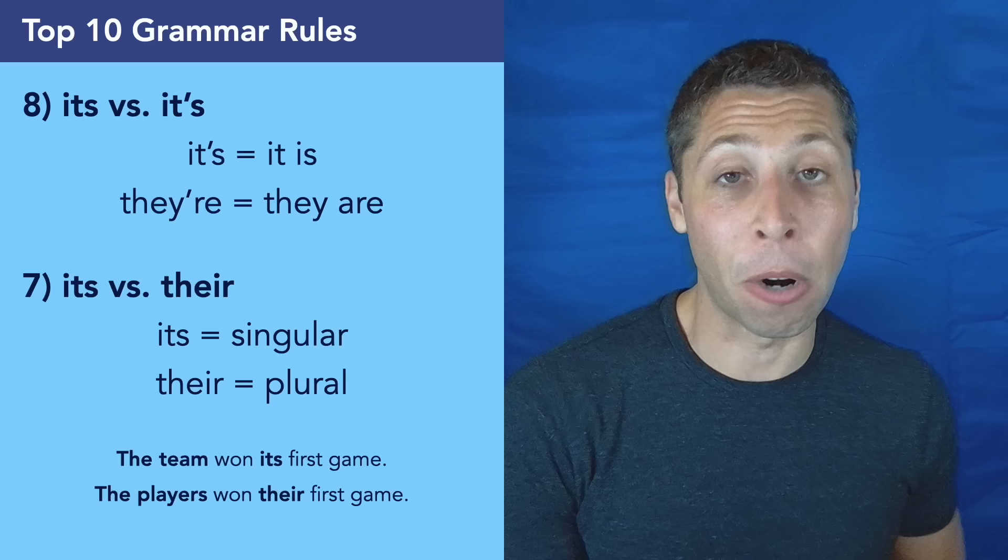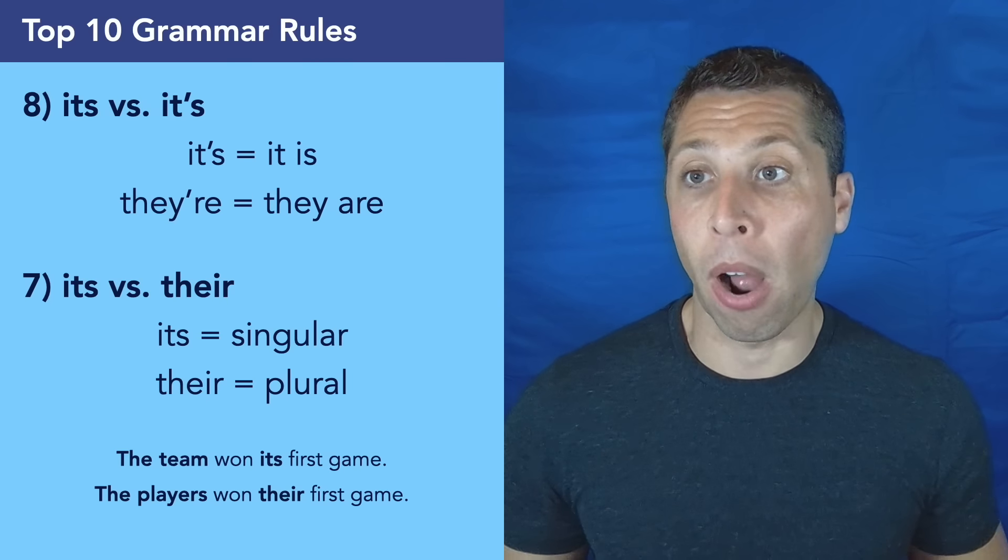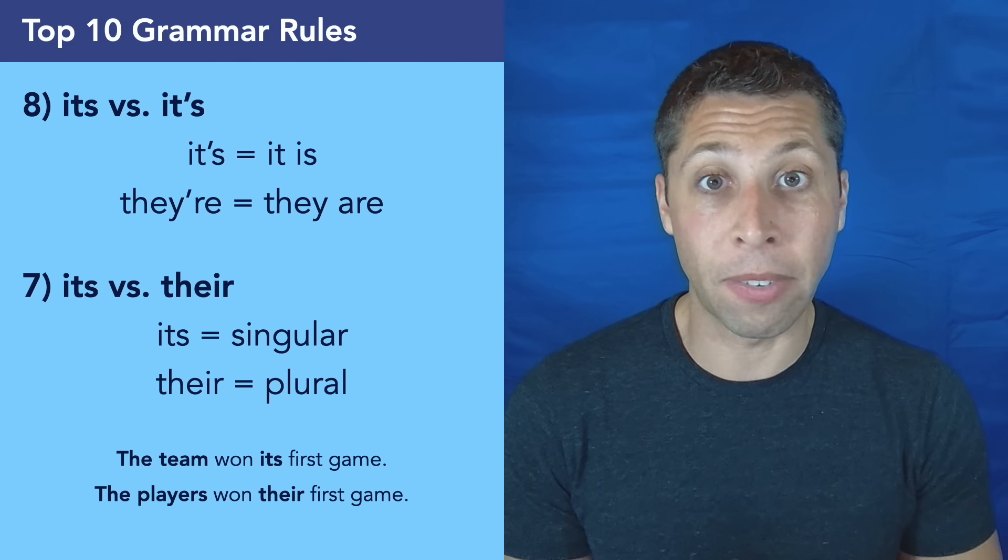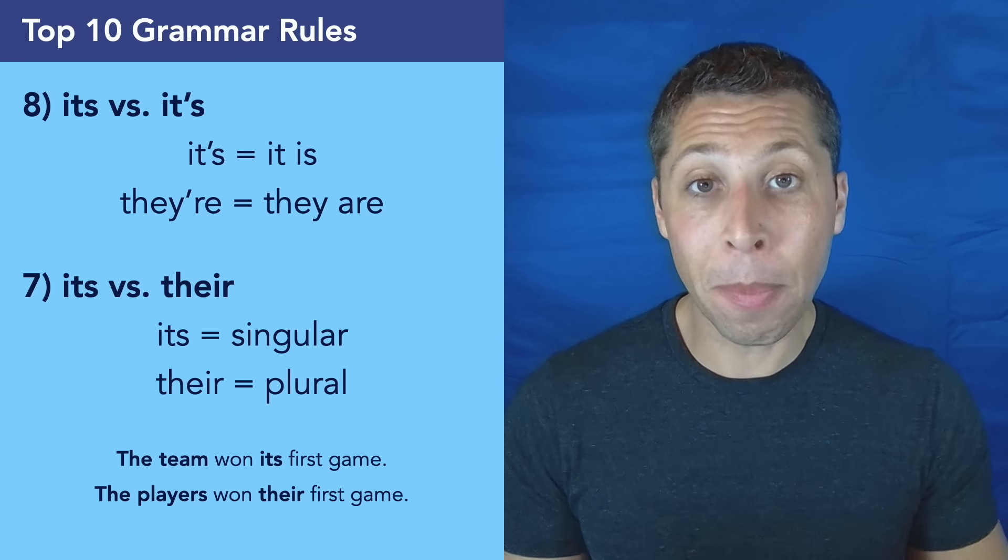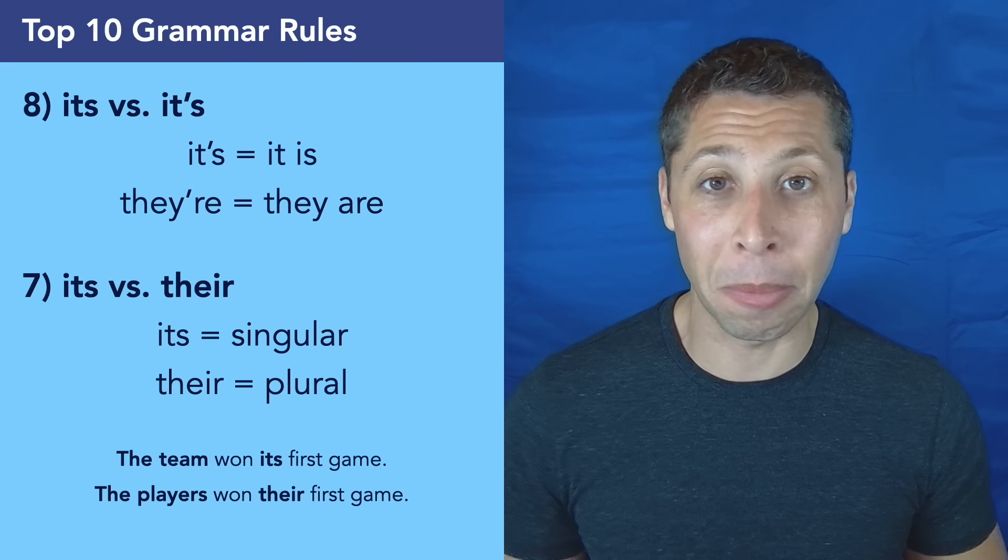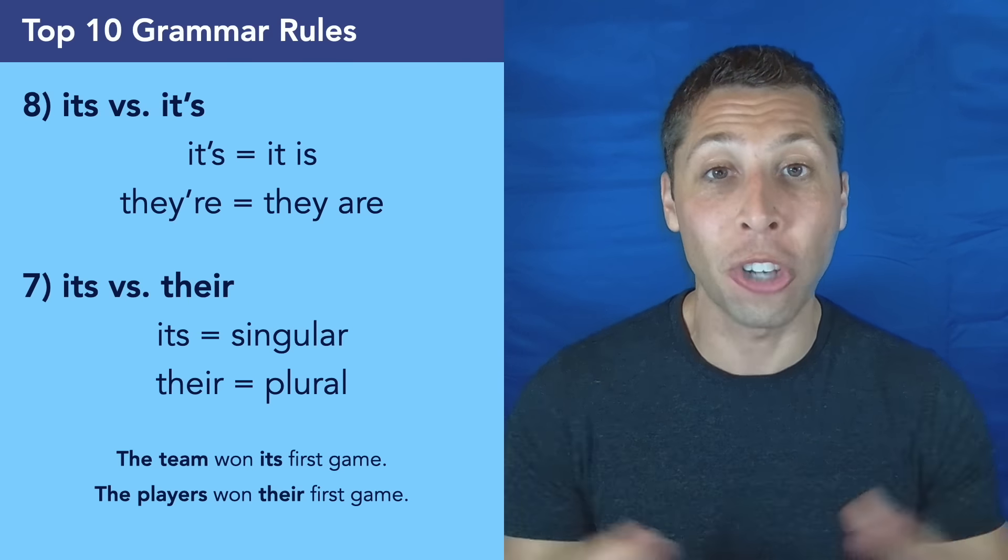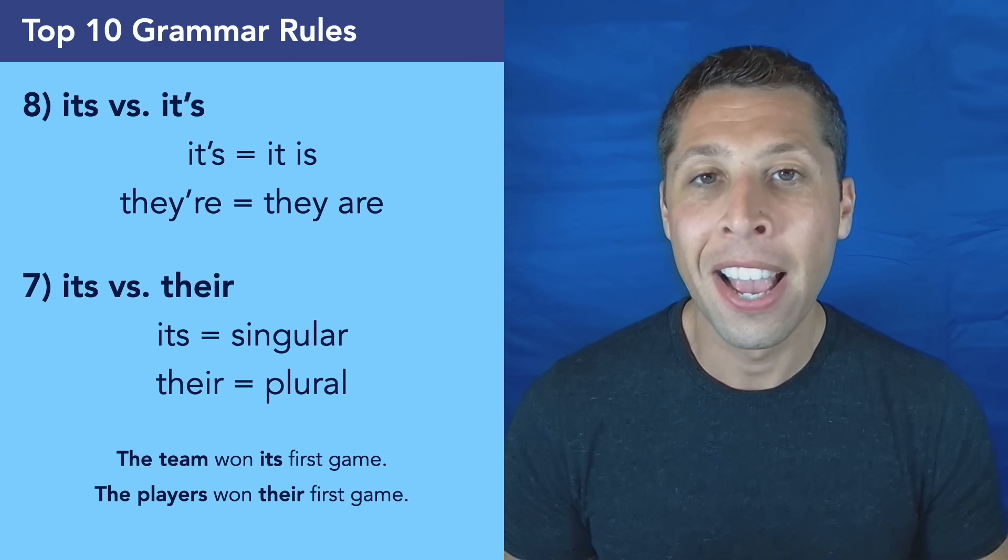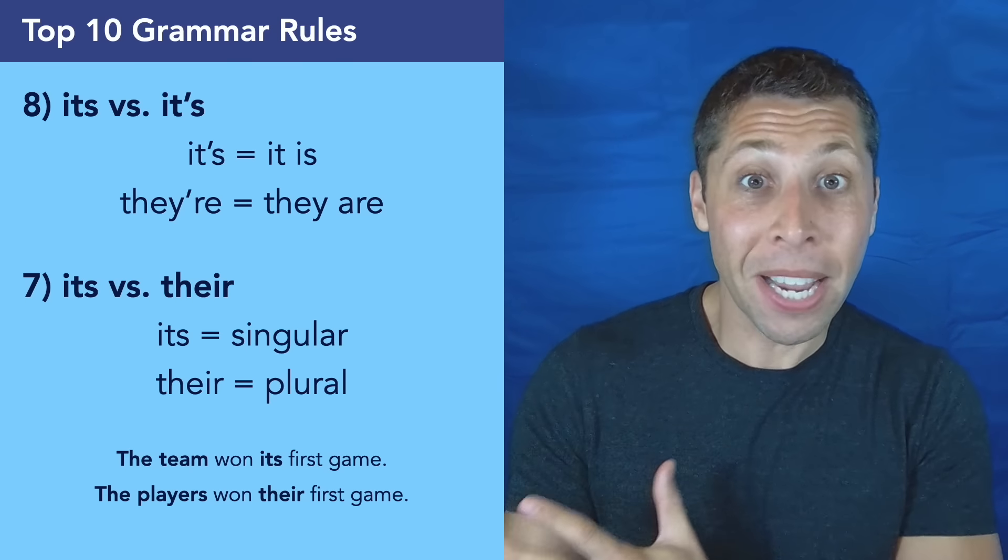Rules eight and seven are both related. They both have to do with pronouns. Now rule number eight, you can't get wrong. First and foremost, we need to just know the difference between its without an apostrophe and it's with an apostrophe. If we have it's with an apostrophe, it is a contraction for the two words it is. It behaves very similarly to they're where we have they are and the apostrophe is showing the contraction of those two words. Those two answers are almost never going to be right on the SAT. They're going to be answer choices, but they're usually wrong.